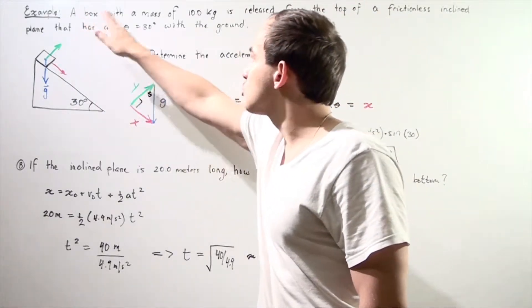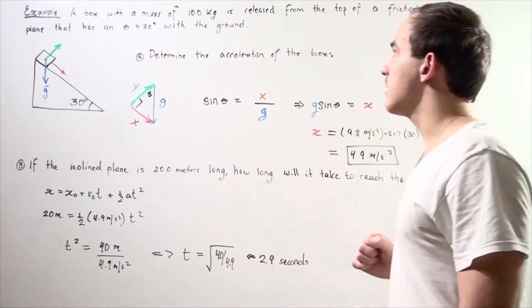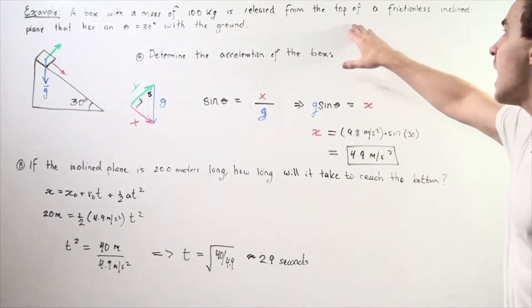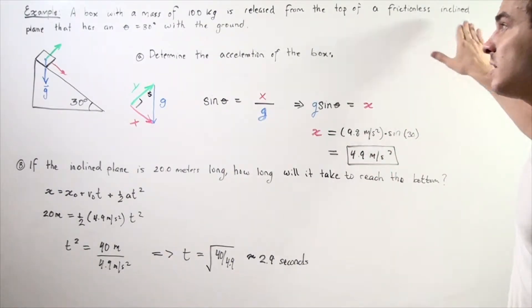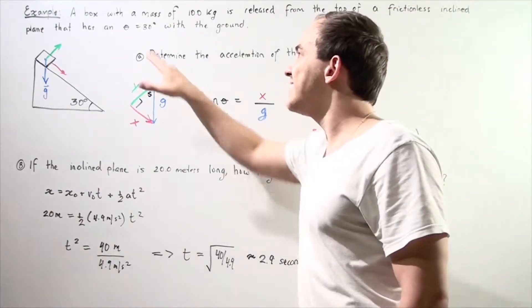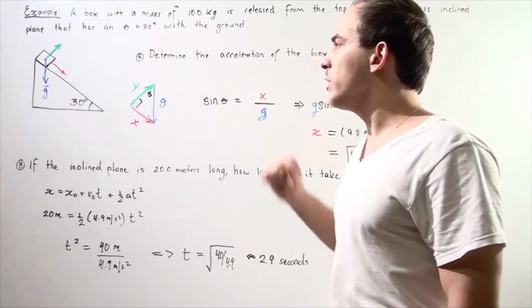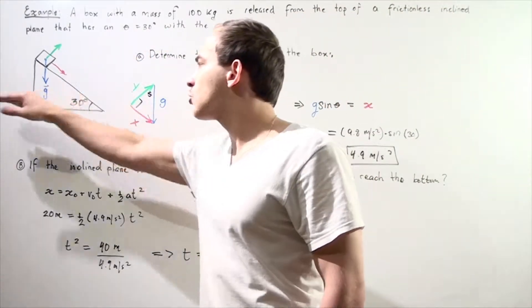Let's suppose that a box with a mass of 10 kilograms is released from the top of a frictionless inclined plane that has an angle of 30 degrees with respect to our ground.